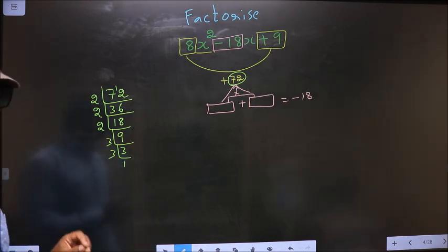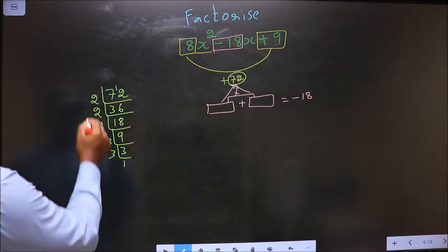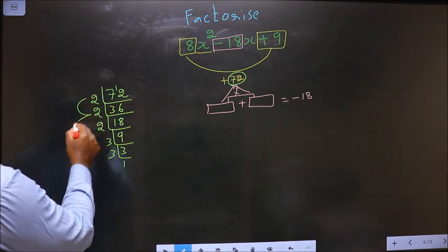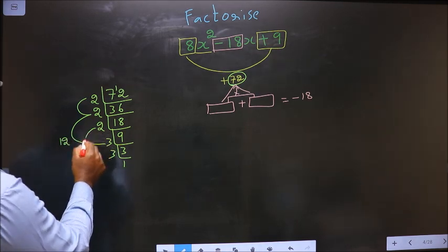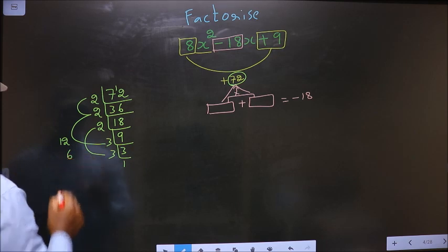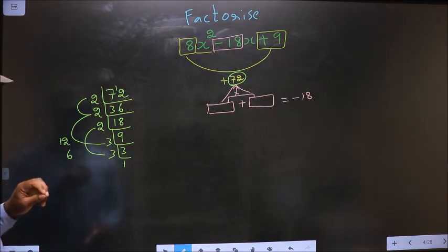The two numbers should be 2 into 2, 4. 4 into 3, 12. And the second number is 2 into 3, 6. 12 plus 6 is 18. 12 into 6 is 72.